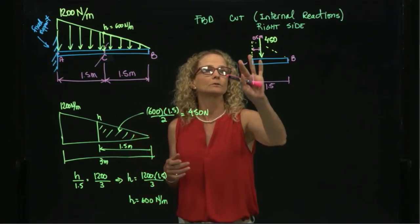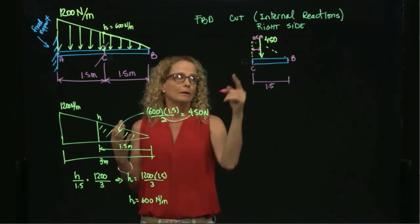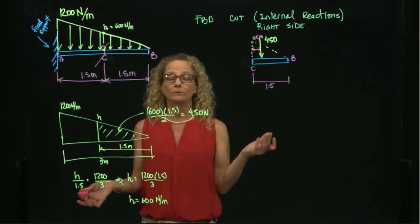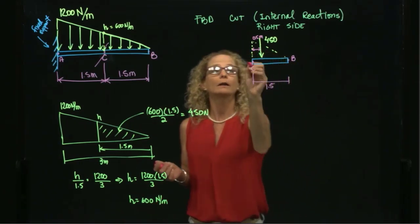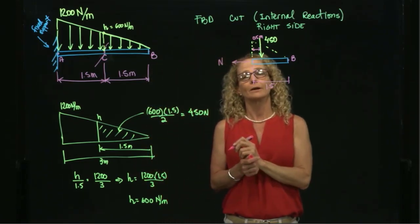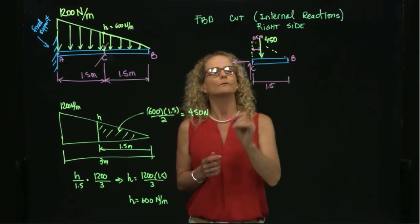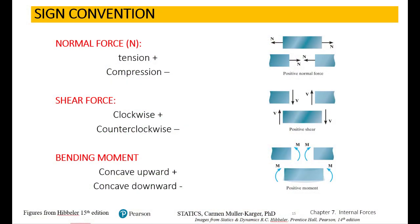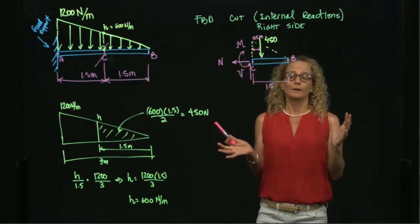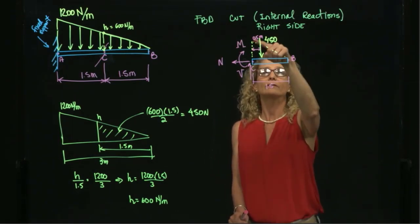Of course I have my internal forces. Let me draw point C so I have space to draw them. I draw my normal force in this direction, my shear force in this direction, and my moment in this direction. Please refer back to the sign convention for normal force, shear force, and bending moment. This is my free body diagram of the cut, with one external force and three internal forces.